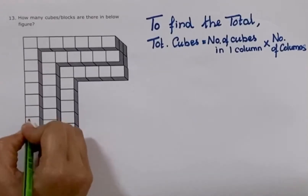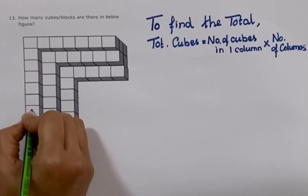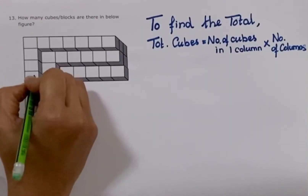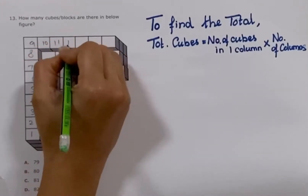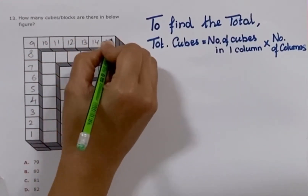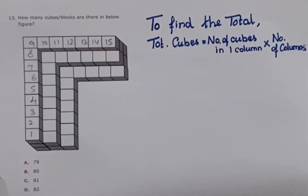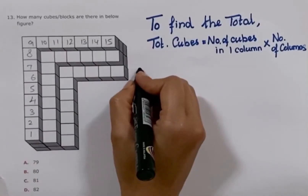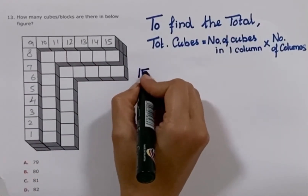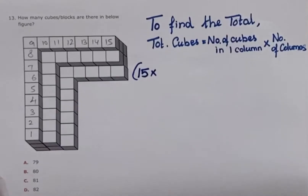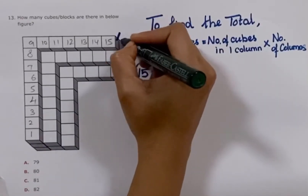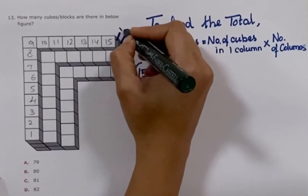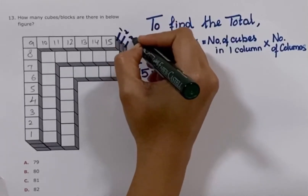Let's count: 1, 2, 3, 4, 5, 6, 7, 8, 9, 10, 11, 12, 13, 14, and 15. So there are 15 small cubes in this column. Take that count and multiply with its number of columns. How many columns here? 1, 2, 3 — there are 3 columns.